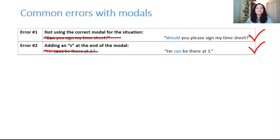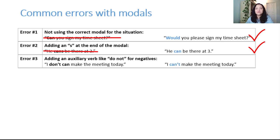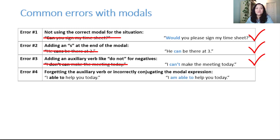Error number three: adding an auxiliary verb like do not for negative modals. Remember that modals are auxiliary verbs, so except for some exceptions, you don't need to add another auxiliary verb. I don't can make the meeting today. The correct sentence is I can't make the meeting today. Error number four: forgetting the auxiliary verb or incorrectly conjugating modal exceptions. I able to help you today. Those modal exceptions can be hard to remember. I am able to help you today.